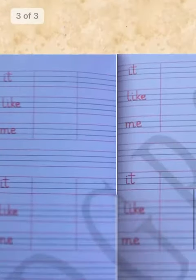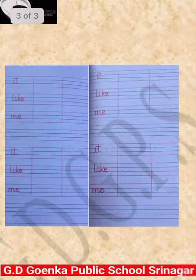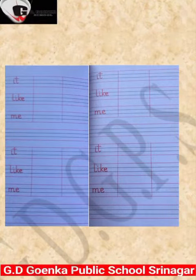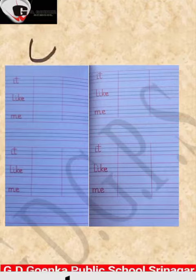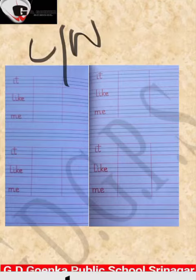This is the picture of your notepad where you will write your classwork and homework. The words are: I-T, it. L-I-K-E, like. M-E, me.